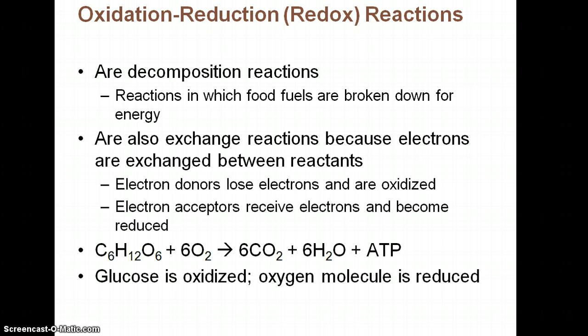Oxidation-reduction reactions, or redox reactions — you remember these from chemistry. These are decomposition reactions in which food fuels are broken down for energy. We're looking at electrons being exchanged between the reactants. One reactant will be an electron donor. The one that donates an electron and loses it is called oxidized; the one that accepts and receives the electron is reduced. For example, glucose and oxygen forming carbon dioxide, water, and ATP — this is the chemical equation for cellular respiration. In this overall process, glucose is oxidized and oxygen is reduced.